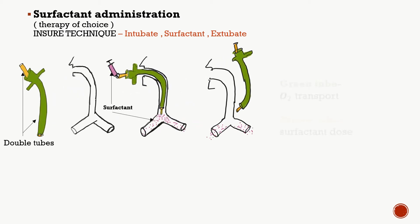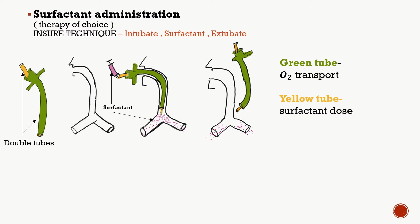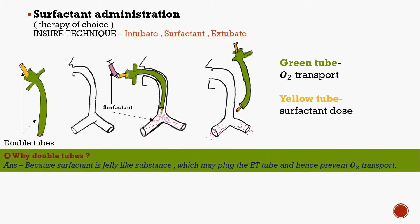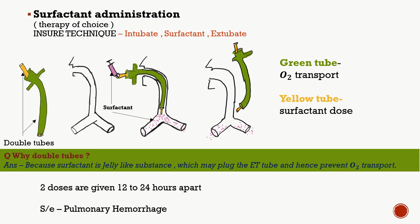The treatment of choice involves administering surfactant using the INCHURE technique, which stands for Intubate, Surfactant, and Extubate. We use double tubes to intubate, administer surfactant, then extubate. Double tubes are used because surfactant is a jelly-like substance that may plug the ET tube and prevent oxygen transport. This ensures regular oxygen supply during surfactant administration. Surfactant is given in two doses, 12 to 24 hours apart. A side effect of the procedure may be pulmonary hemorrhage.